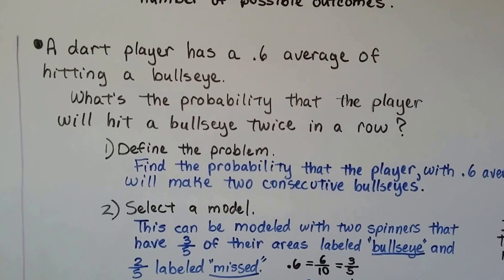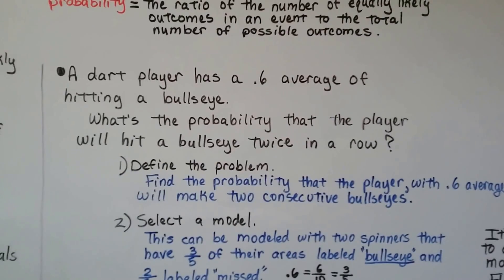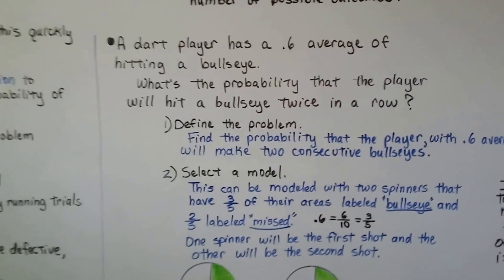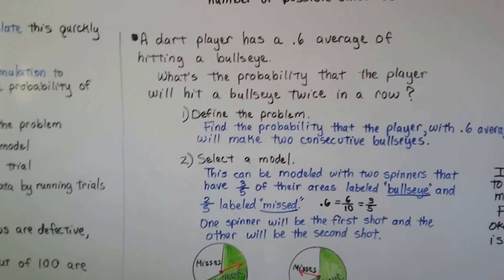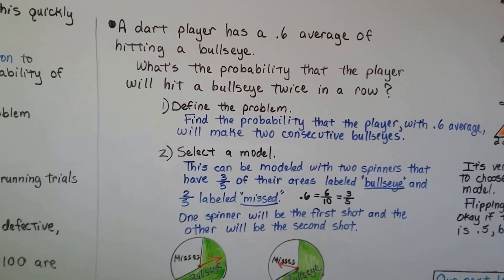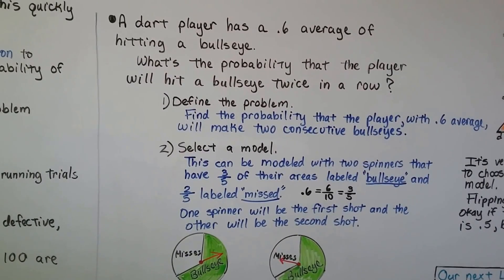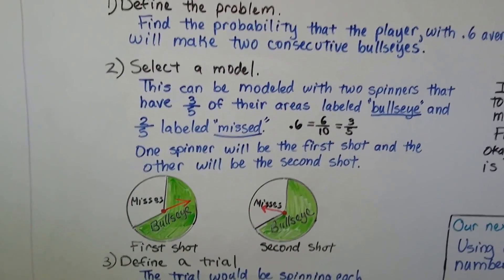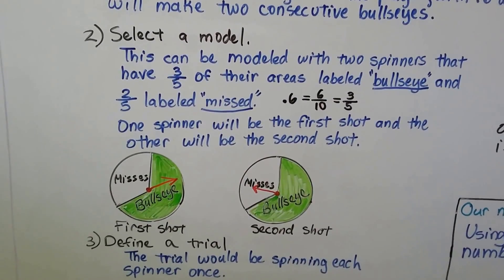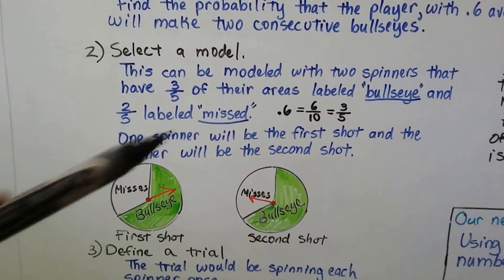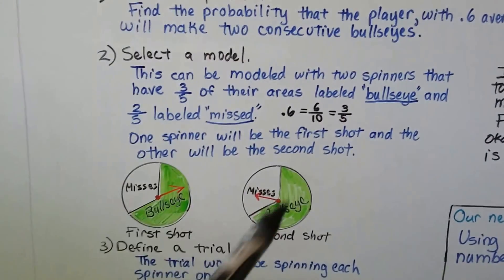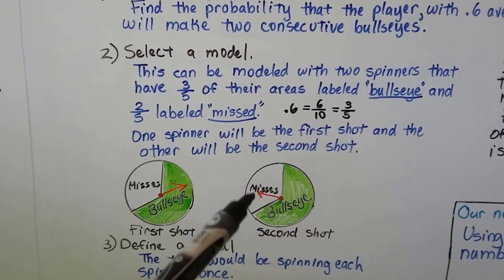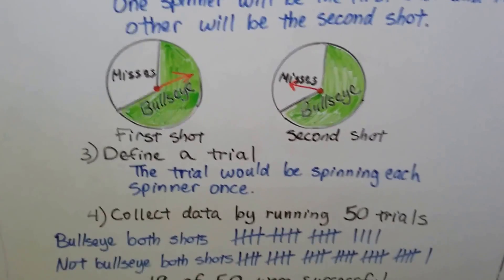A dart player has a 0.6 average of hitting a bullseye. What's the probability that the player will hit a bullseye twice in a row? So first thing we're going to do is define the problem. We're going to find the probability that the player with 0.6 average will make two consecutive bullseyes. The next thing we're going to do is select a model. This can be modeled with two spinners that have three-fifths of their areas labeled bullseye, and two-fifths labeled missed. So if the average is .6, that's six-tenths, and we can simplify that to three-fifths.